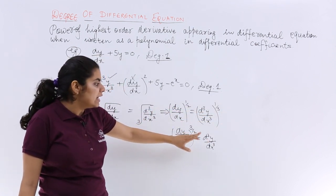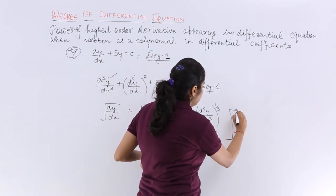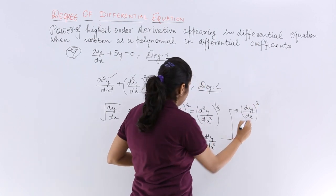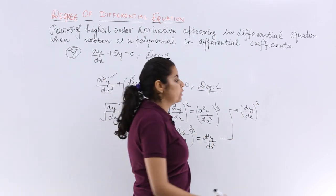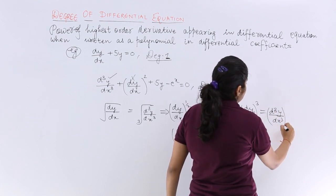Let me square both sides. So when you square both sides, what happens? It becomes (dy/dx)³. You are squaring both sides is equal to (d³y/dx³)².